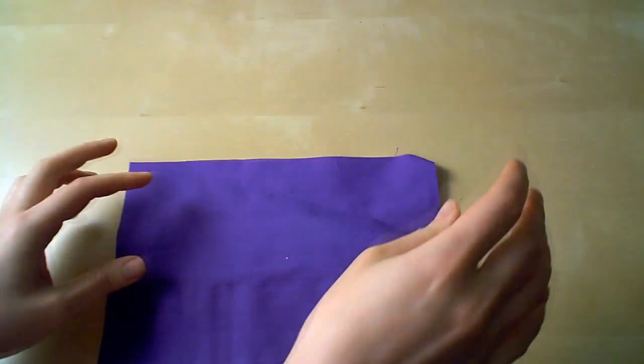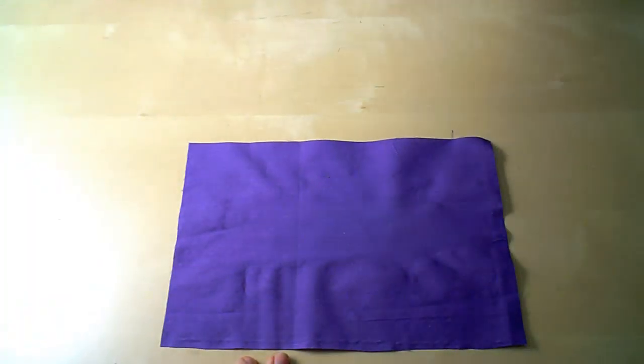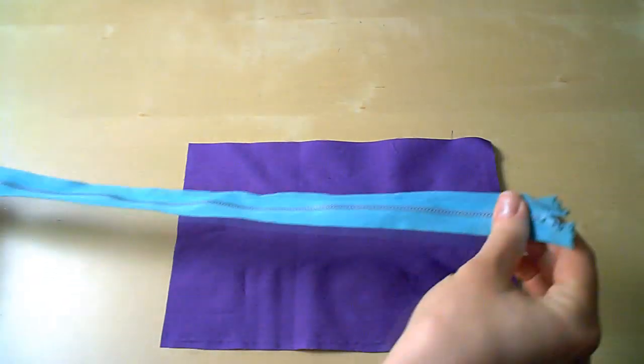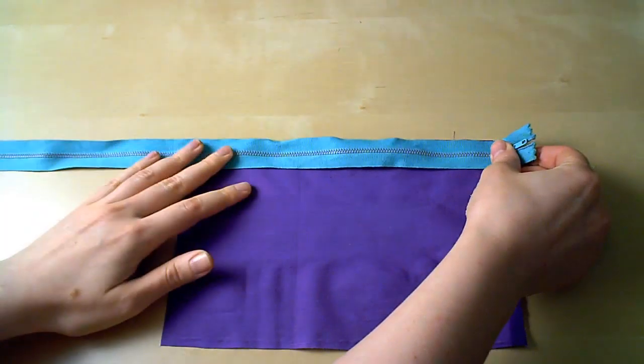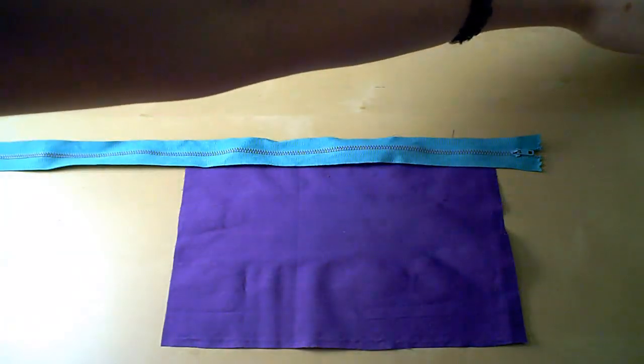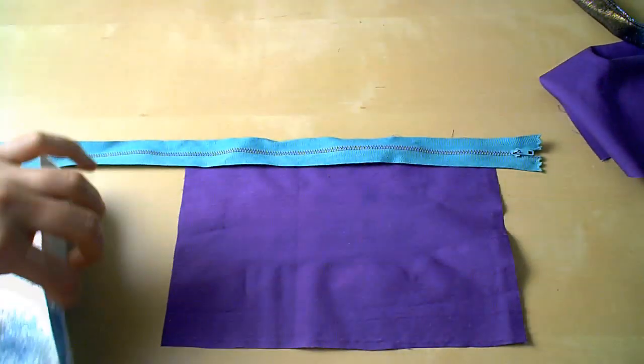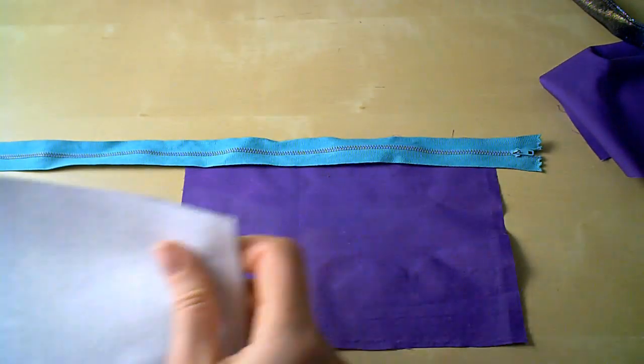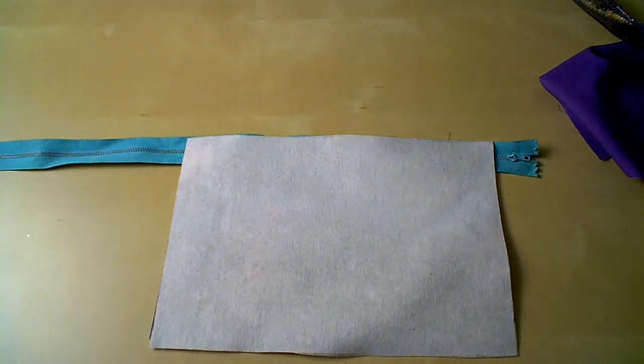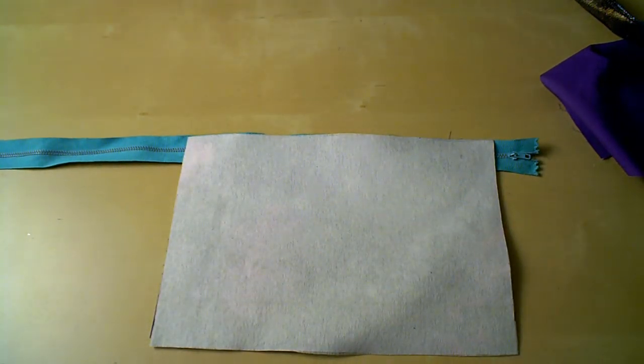Now we can move on to the bag. Grab one lining piece, and I made the mistake of choosing a lining fabric that's the same on the wrong side and the right side, but place your lining fabric right side up. Next comes the zipper, also right side up. And then one of our outer pieces, right side down. Line up the top edges of the three pieces, and note that I've offset the zipper about 1 inch from the pole.